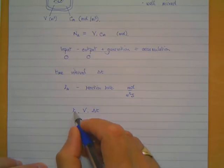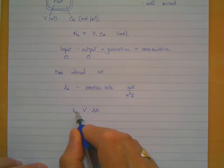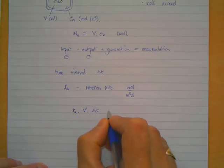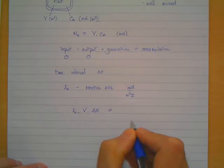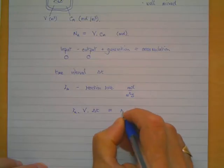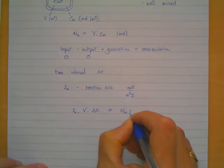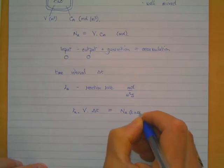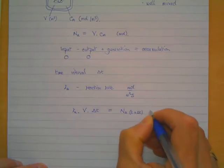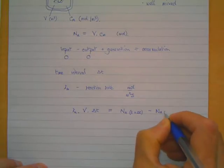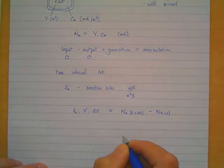Because rA is negative, because A is actually reacting away and being consumed, this term will have a negative value and that's equal to the accumulation. The accumulation we're going to use is the number of moles of A at the end of our time interval, so that's t plus delta t, minus the number of moles that were there at the start of our time interval at time t.